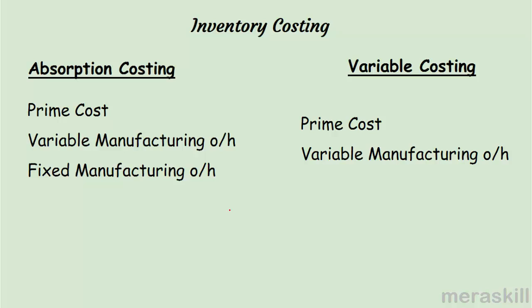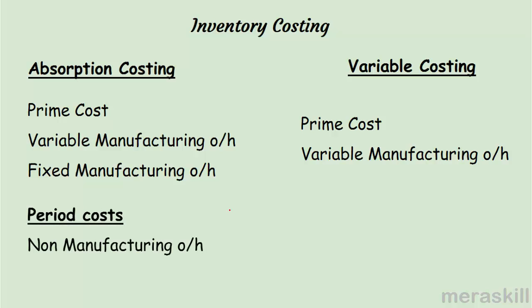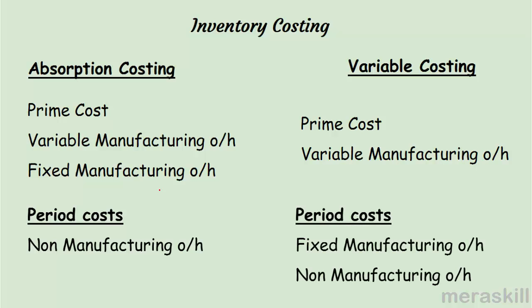Non-manufacturing overheads — such as administration overheads and selling overheads — are called period costs; they are not product costs. Under inventoryable costs, we take only manufacturing overheads. Under variable costing, fixed manufacturing overhead is also treated as a period cost, because it has not been taken into the cost of goods manufactured.